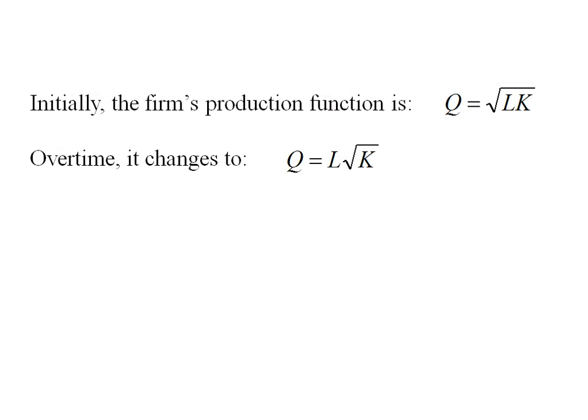Let's suppose the firm's production function is Q equals square root of L times K. And then over time it changes to Q equals L times the square root of K.